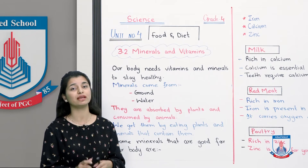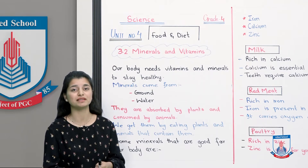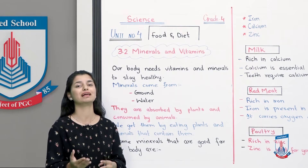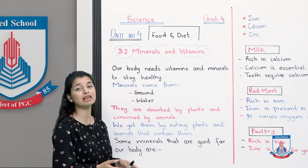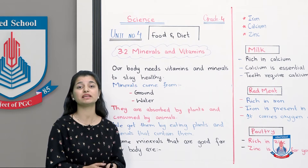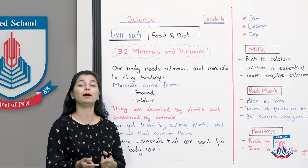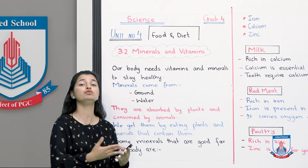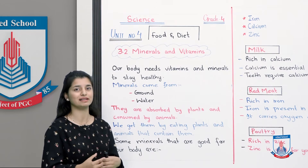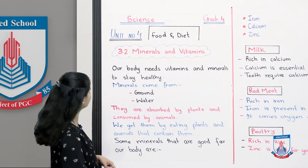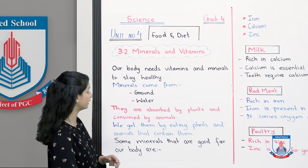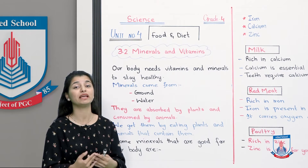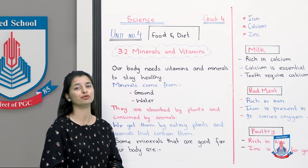Minerals are of different types — calcium, iron, and zinc are some examples. Our body has different minerals, and these minerals are found in the soil and in the water. Plants absorb them, while animals and humans absorb them by eating other animals or plants. There are a few minerals that are good for our body — let's look at them.